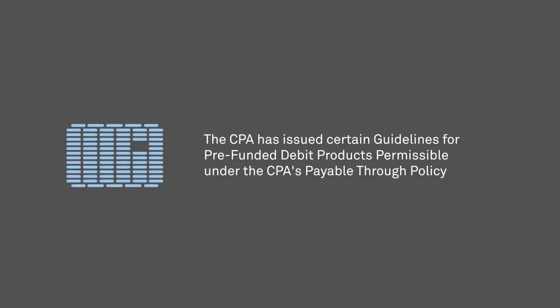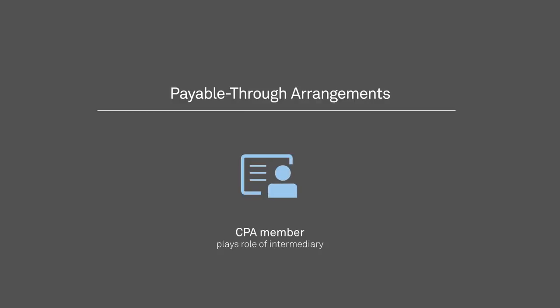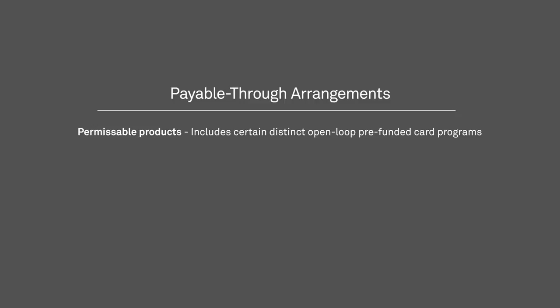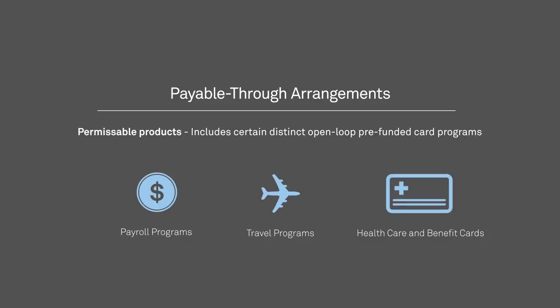The CPA has also issued certain guidelines for pre-funded debit products permissible under the CPA's payable-through policy. In broad terms, payable-through arrangements are those in which a CPA member plays the role of an intermediary and does not have a direct relationship with the end user of the debit card or device. The funds by which payments are made are held or managed by a non-CPA member who makes the pay-no-pay decision for payment authorization. Products permissible under the CPA's payable-through policy include certain distinct open-loop pre-funded card programs, such as certain payroll programs, travel card programs, and health care and benefit cards. Many of these products are backed by a network brand and can be used anywhere that network is available, in the same manner as traditional debit cards.